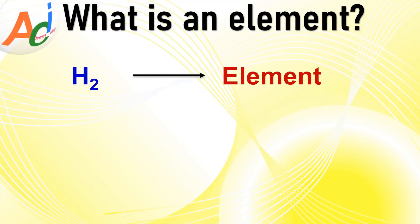Now let us explore a few examples to make the concept more clear. Hydrogen gas, H2, is an element because it contains only hydrogen atoms. In other words, all the atoms in H2 possess the same atomic number, which is equal to 1.